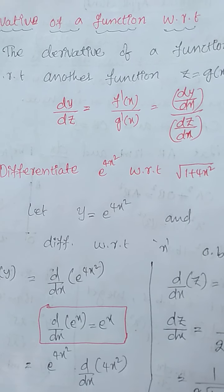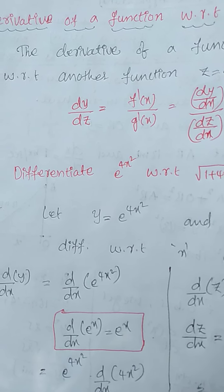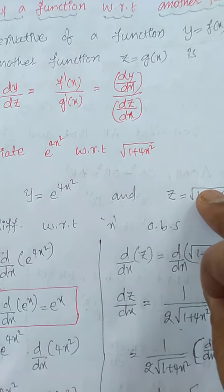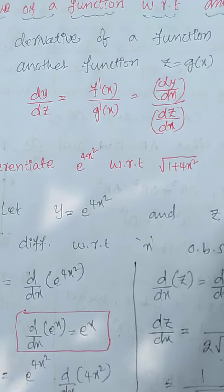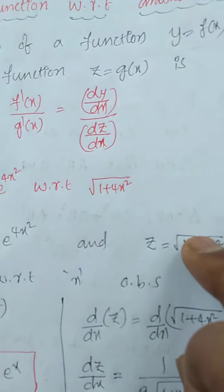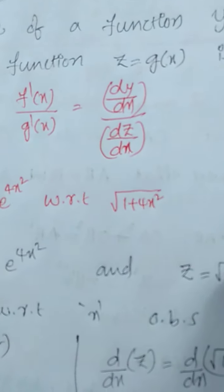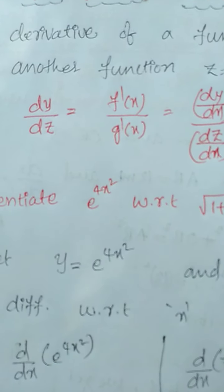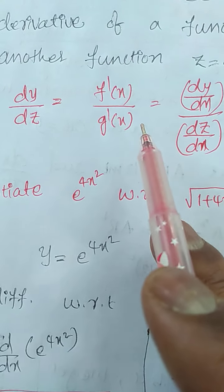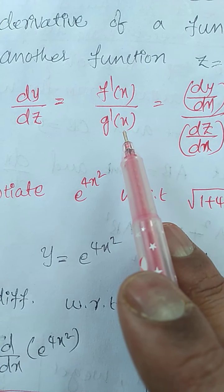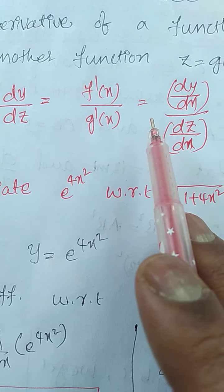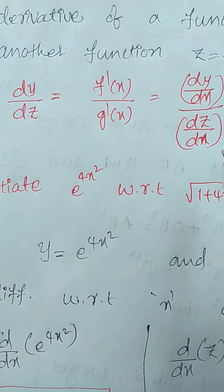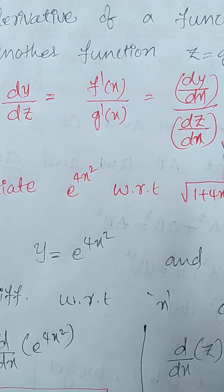Let us discuss the statement, treated as a formula. The derivative of a function with respect to another function: one function assumed as y = f(x) and another function assumed as z = g(x). The derivative of one function with respect to another function is dy/dz = derivative of f(x) divided by derivative of g(x), which equals dy/dx divided by dz/dx. This is called the derivative of one function with respect to another function.